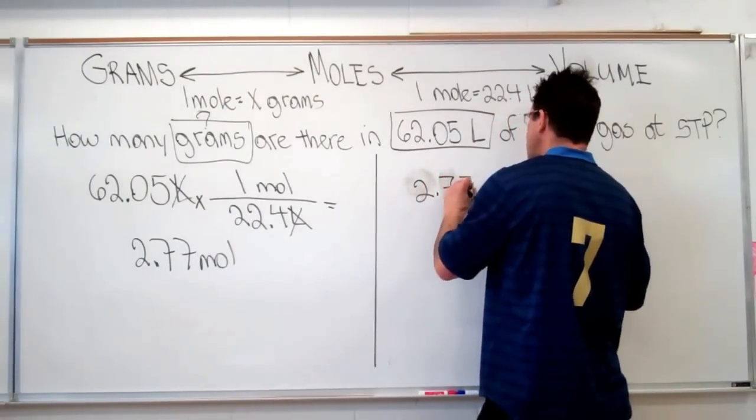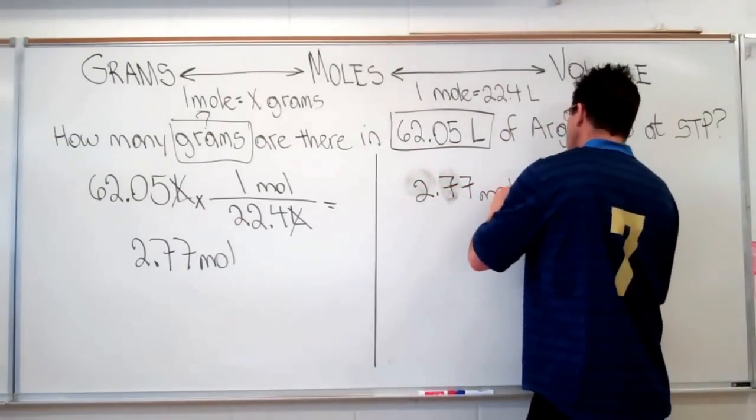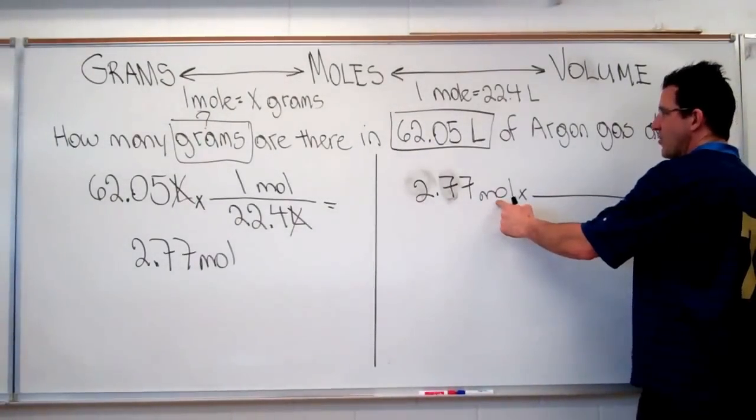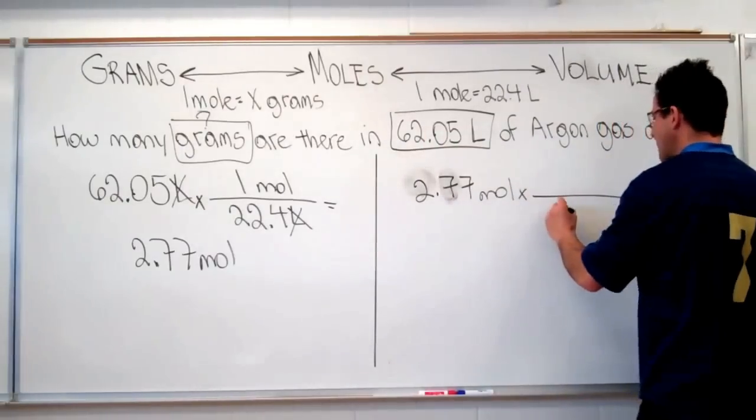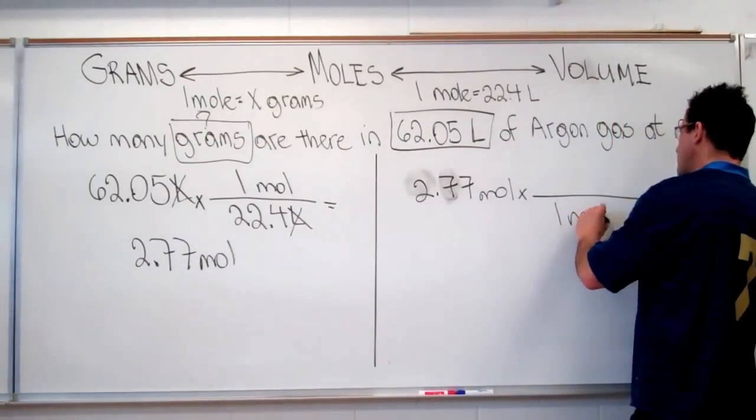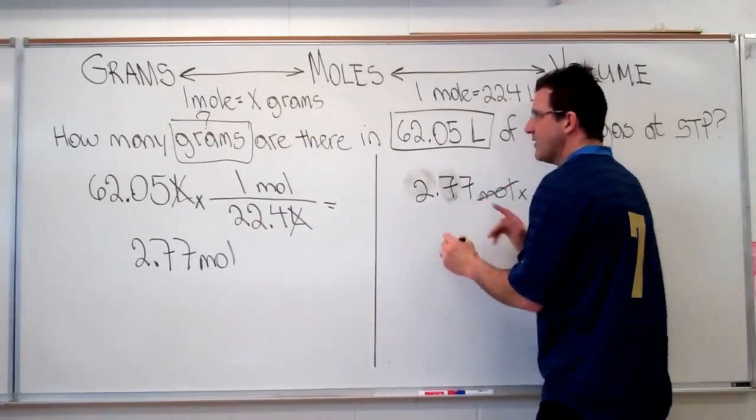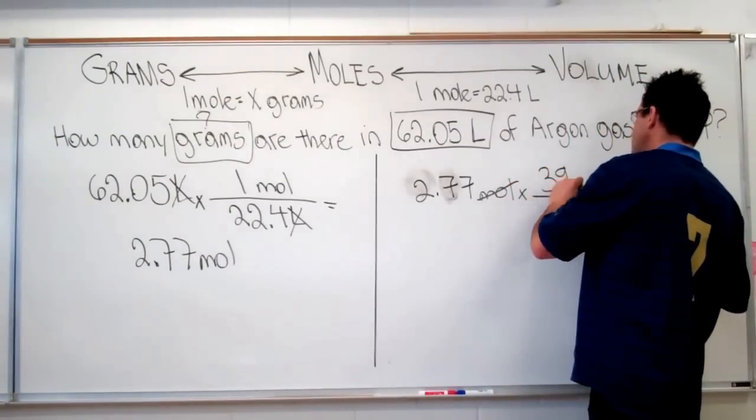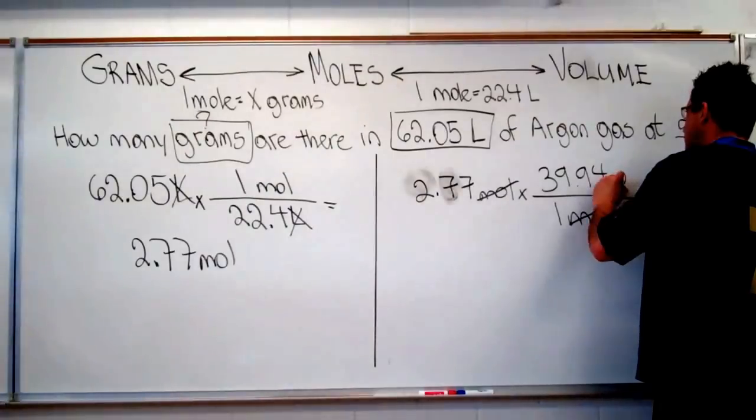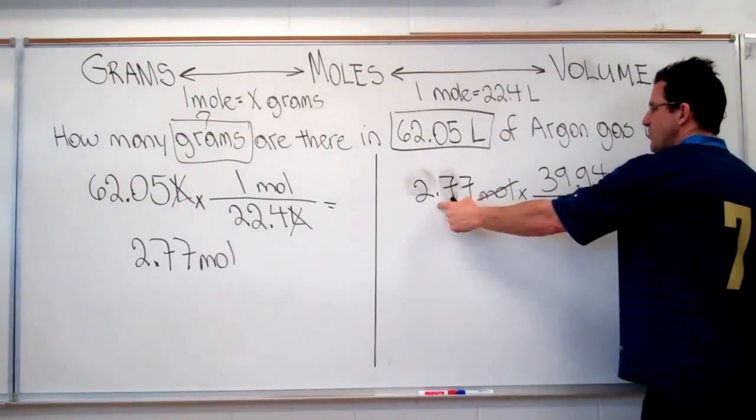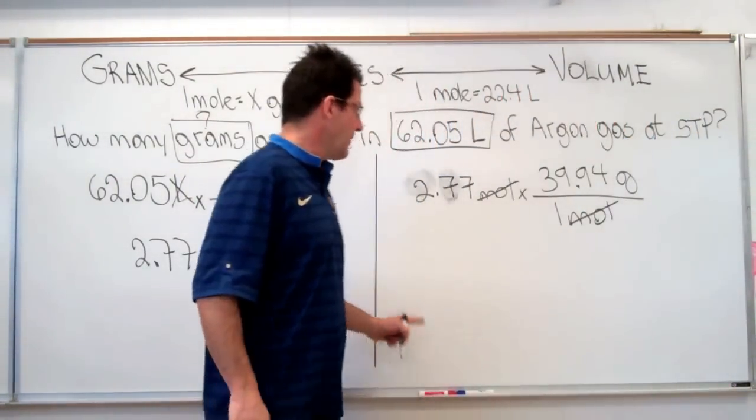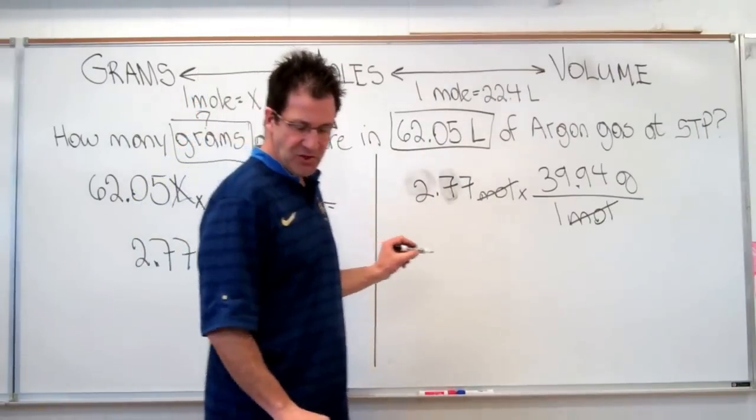So we're going to put down 2.77 moles times our conversion factor. We want to have the mole here, so we're going to put the mole in the bottom. One mole goes in the bottom, so that cancels. We put our molar mass on the top. The molar mass of argon is 39.94 grams.